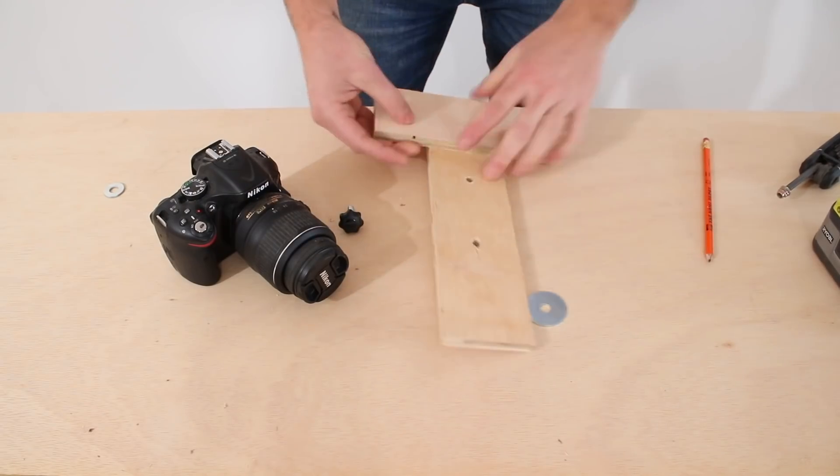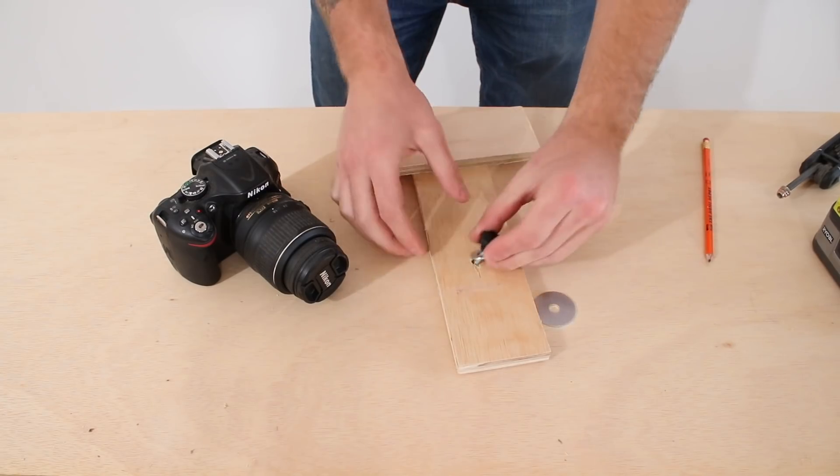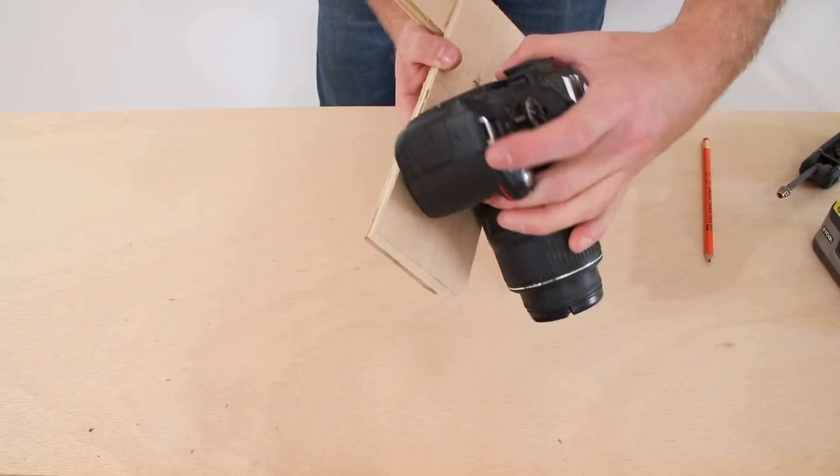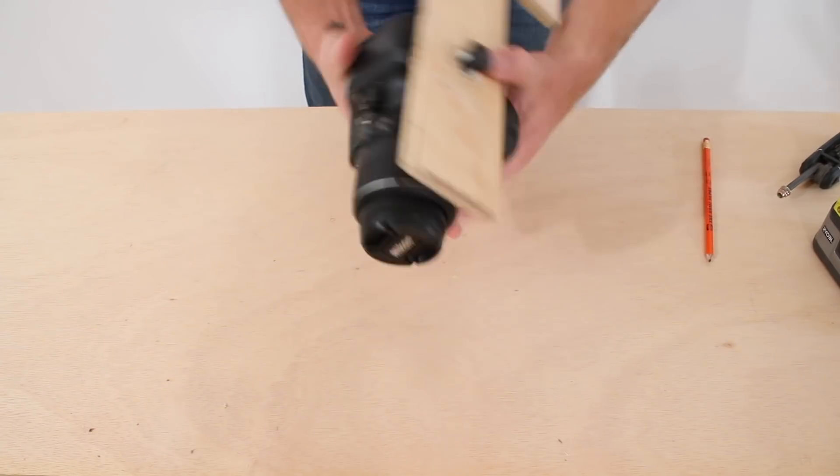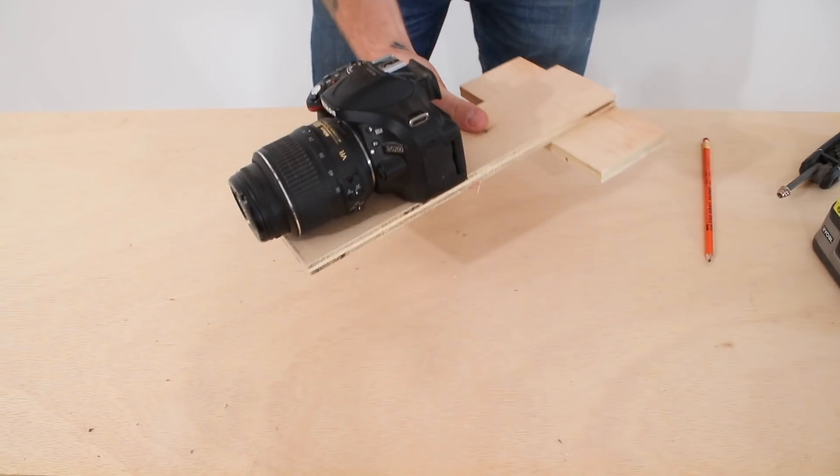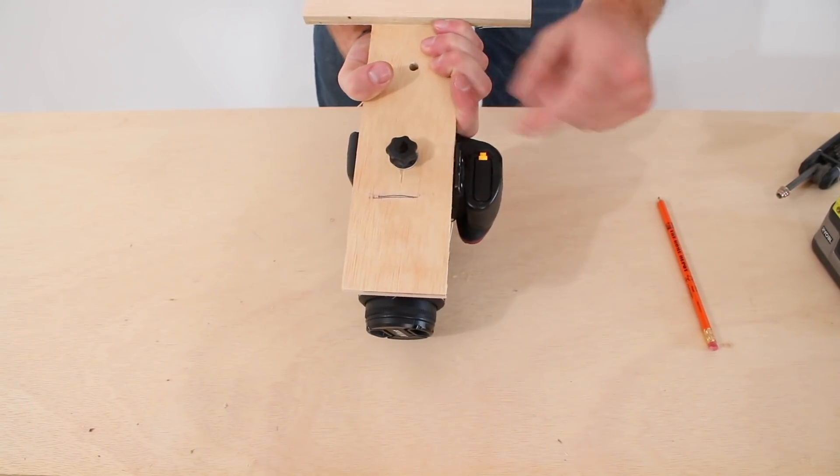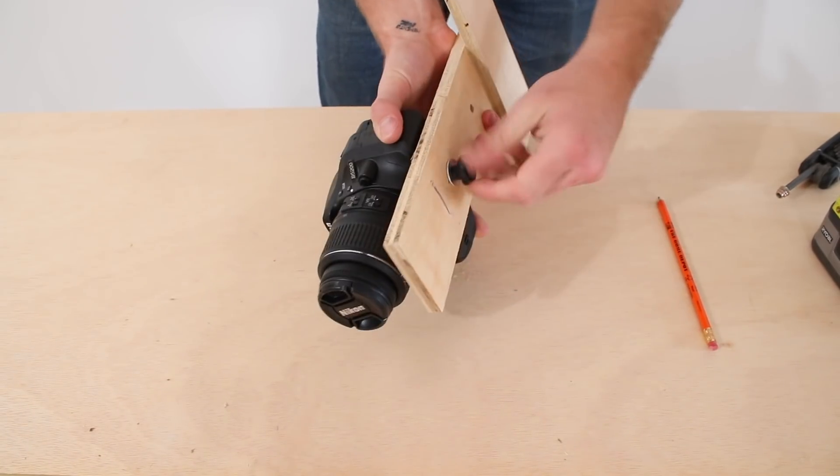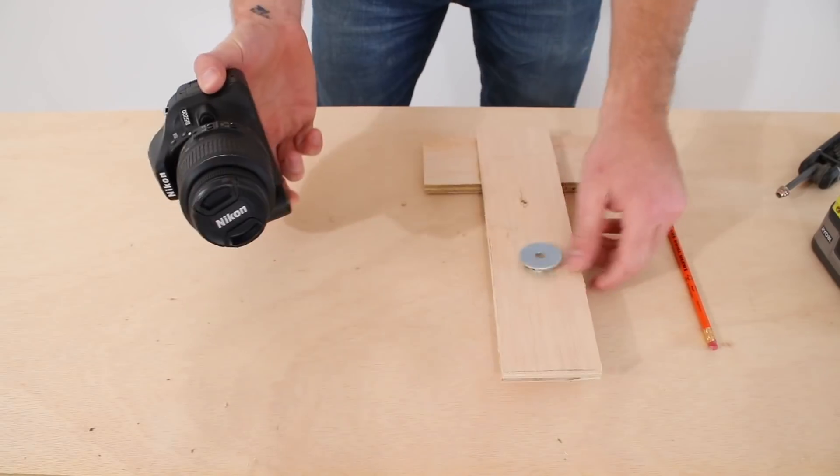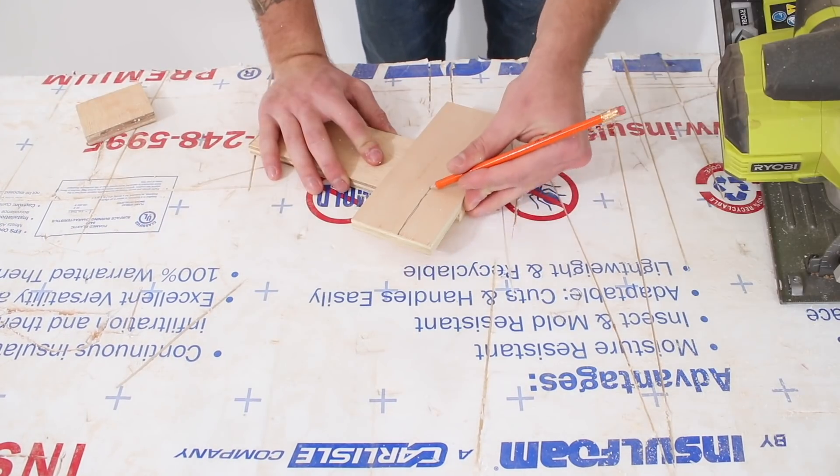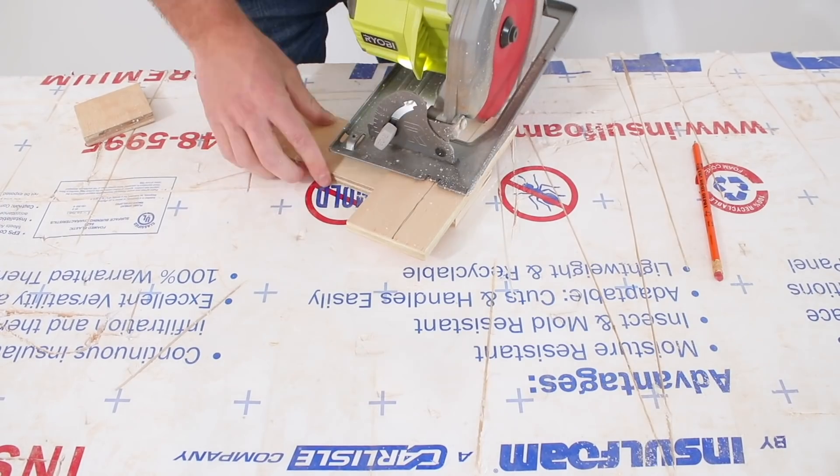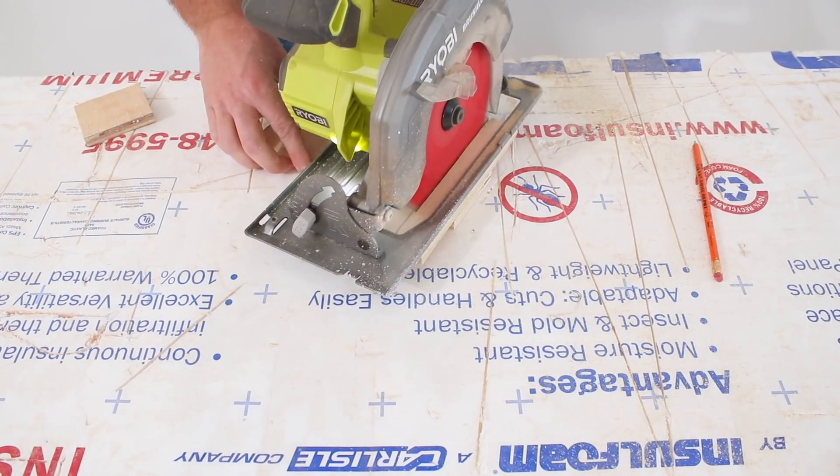Like I said earlier, quarter 20 threads are standard for 90% of photo and video equipment. So I just used another shorter knob with quarter 20 threads to attach the camera to the mount. Once again I used plenty of washers to distribute all of the pressure. Then I marked and cut that long piece to its final length so that it was out of the way of the lens but still provided plenty of support. I also took that opportunity to trim down the top bar of the stretcher just to clean everything up and make it a little more low profile.